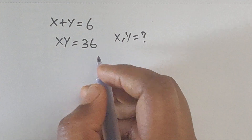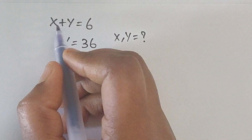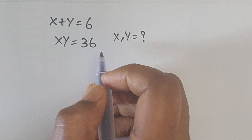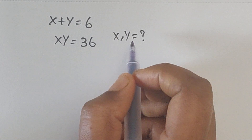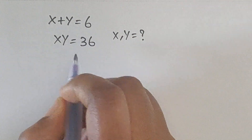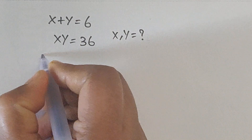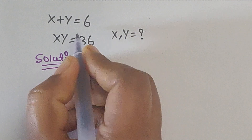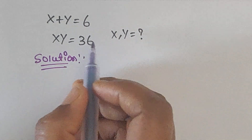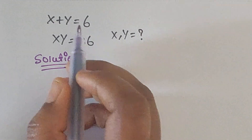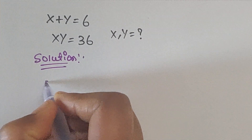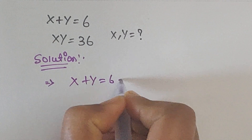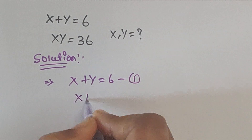Hello everyone, welcome back to our channel. Here we have one problem: x plus y equals 6, and x times y equals 36. In this problem we have to find the values of x and y. Let's see the solution. We have been given two equations and we have to find the values of x and y from these equations.